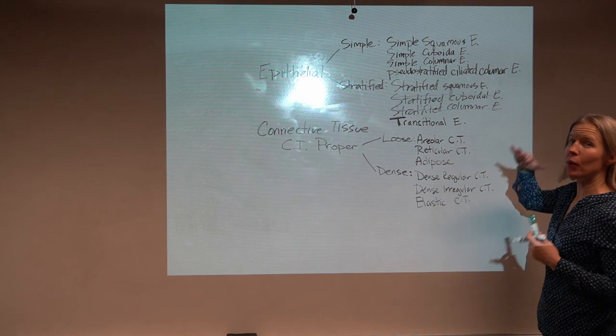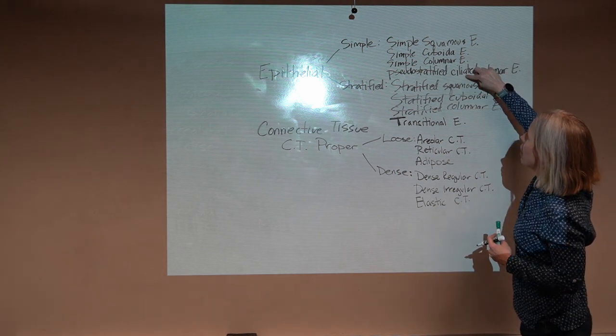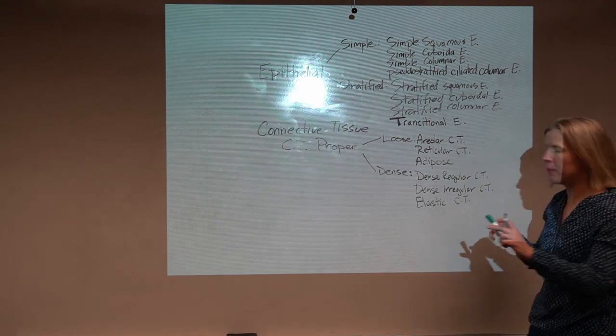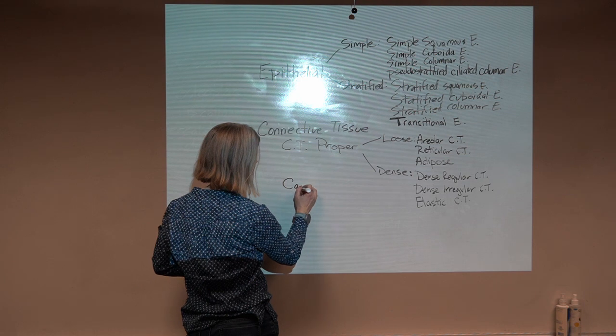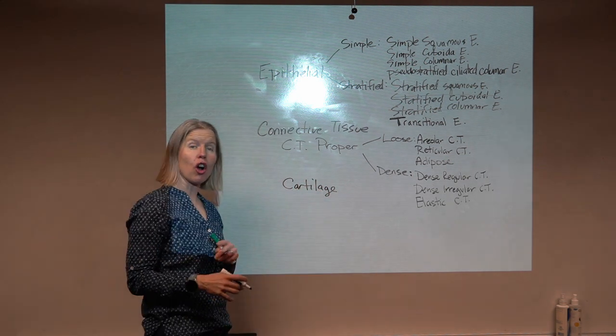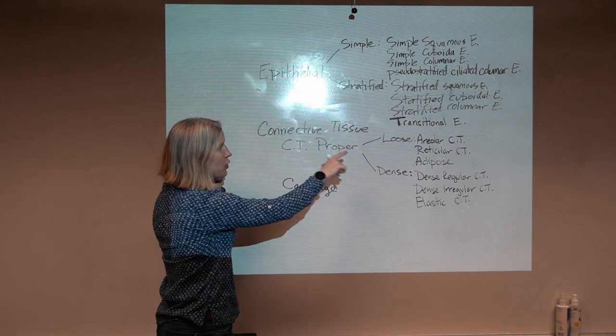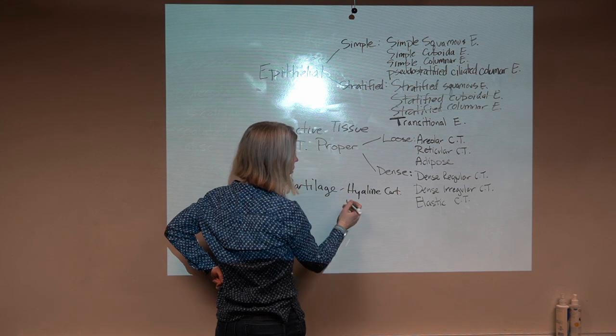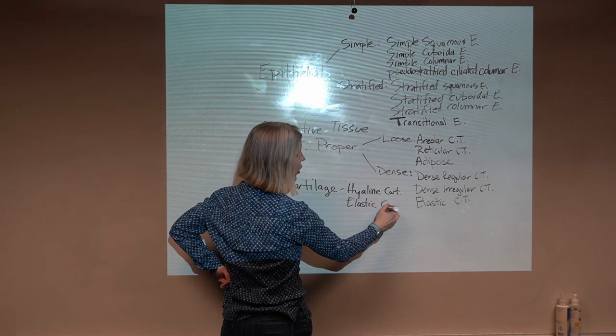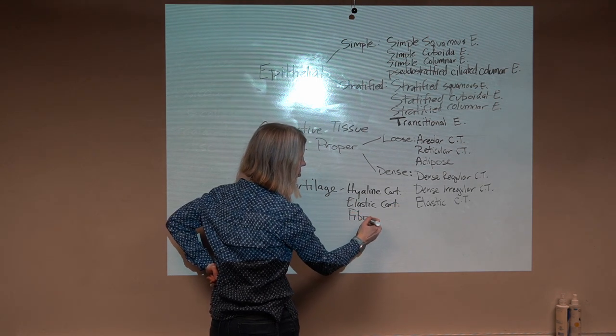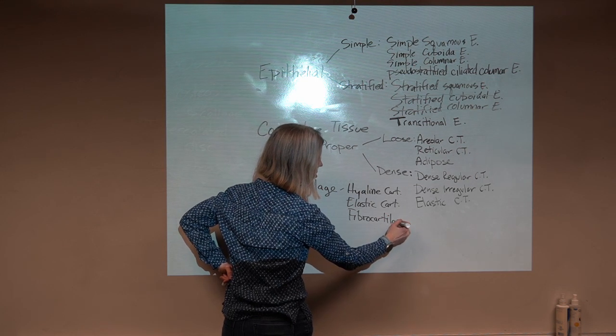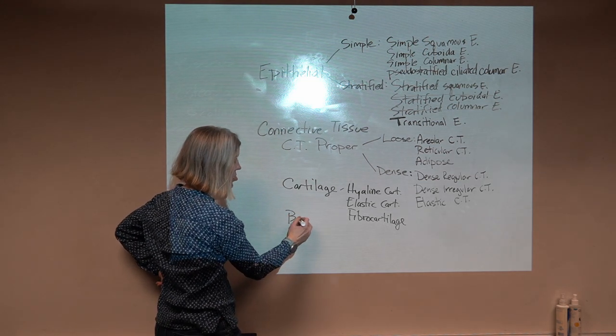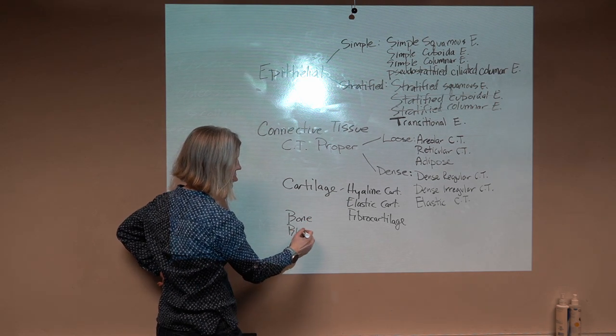When I look at this, I look for patterns. There's three and three. In epithelium, it's four and four. In connective tissue proper, it's three and three. We had cartilage, and there were three different types of cartilage. We had hyaline cartilage, elastic cartilage, and fibrocartilage. Continuing on in connective tissue, then we had bone, which is bone, and blood, which is blood.